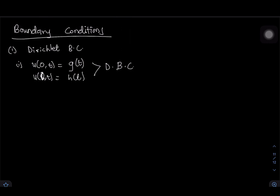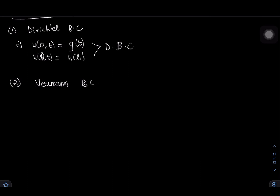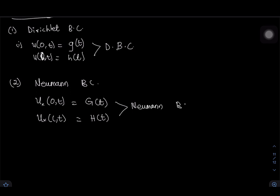Number two is the Neumann boundary condition. Here you have the derivative of the solution at the borders in space. The example is u_x(0, t) equal to capital G(t), and u_x(L, t) equal to capital H(t). That is the Neumann boundary condition.